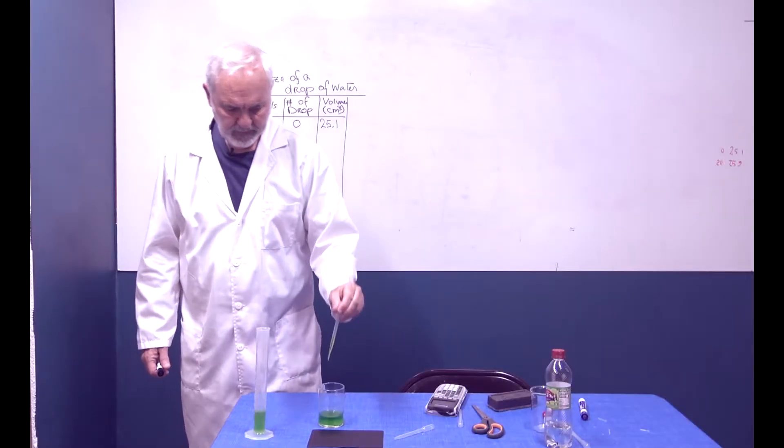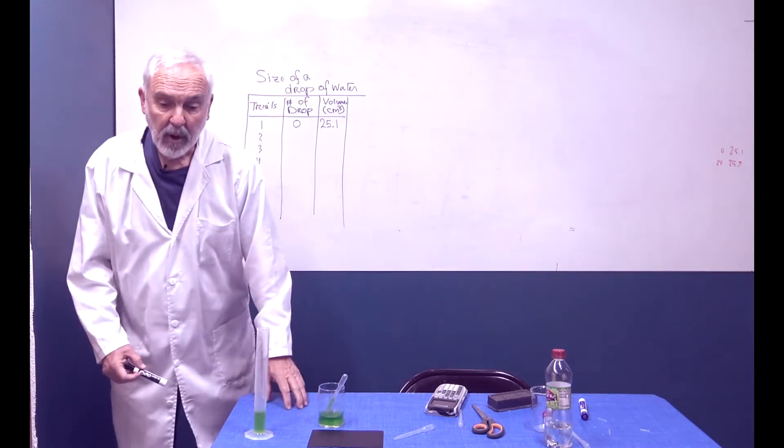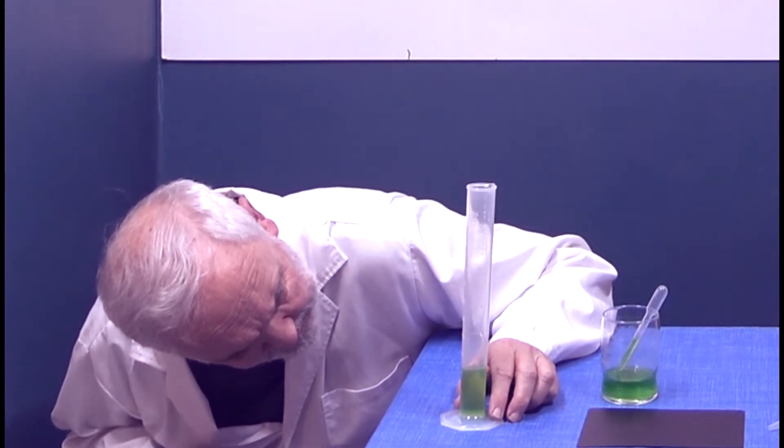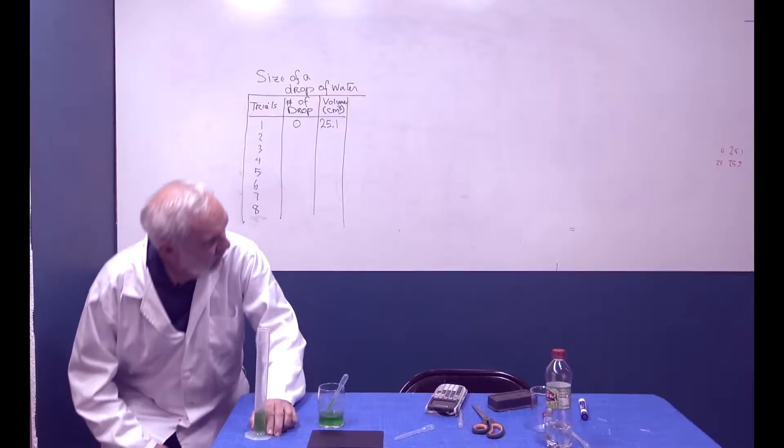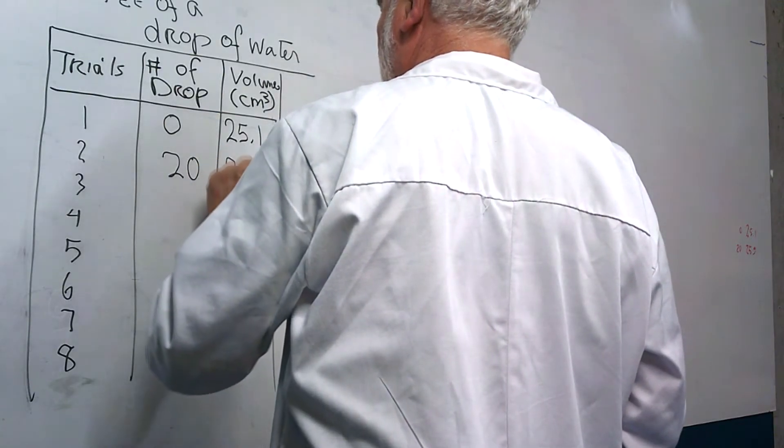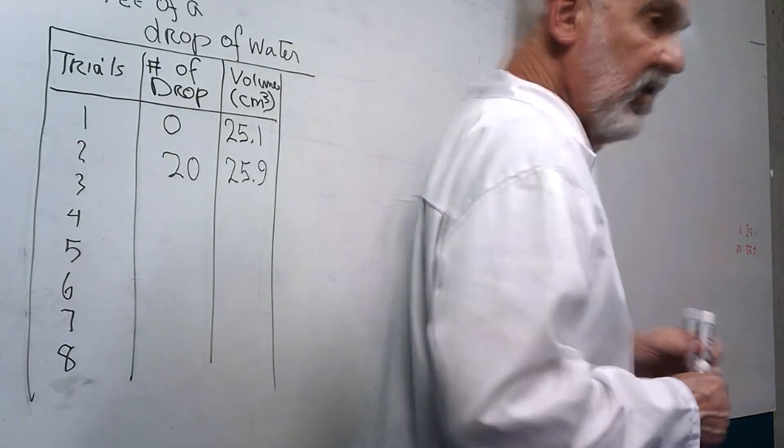1, 2, 3, 4, 5, 6, 7, 8, 9, 10, 11, 12, 13, 14, 15, 16, 17, 18, 19, 20. It doesn't matter how many drops I add, I just have to know how many drops I add. Let's get my eye down to the level. We have, it looks like 20 drops, 25.9 cubic centimeters.